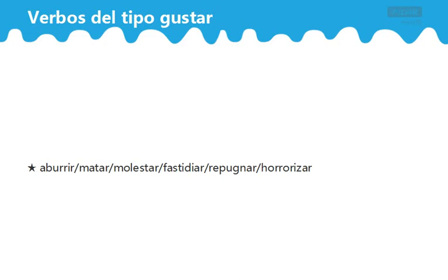像 gustar 这个词，por ejemplo，me gusta la música。这句话中，la música 做的是主语，音乐使我喜欢，翻译成中文就是我喜欢音乐。所以我们把它统一称为始动用法。像这样的始动用法的词有非常多，今天哈尔老师把这些动词给大家汇总了一下，当然只讲一些比较常用的，除了动词之外还有些词组也提到了里面来。